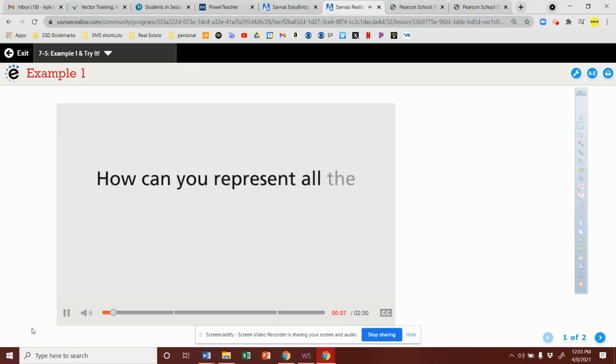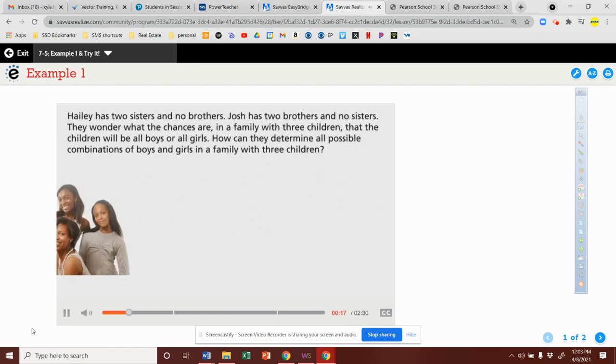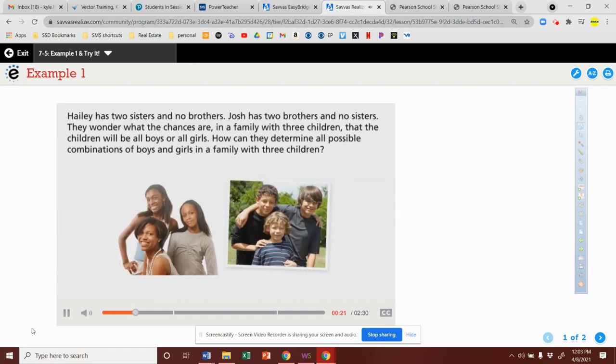How can you represent all the possible outcomes, or sample space, of a compound event? Think about this question during the lesson. Hailey has two sisters and no brothers. Josh has two brothers and no sisters. They wonder what the chances are in a family with three children that the children will be all boys or all girls.